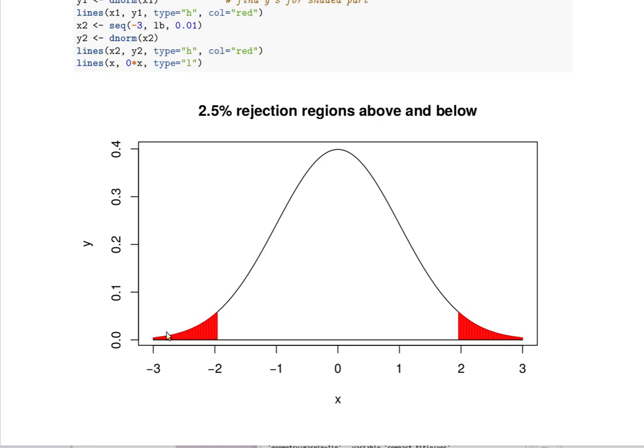And of course we've got a rejection area down here that's the same size. 0.025 is the probability of being below this particular z value. So our job is to find these two z values.